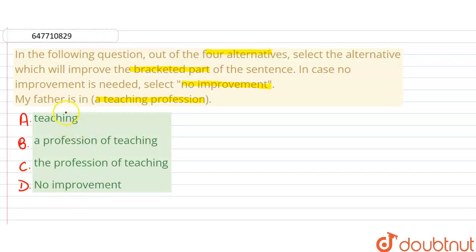So, let's read this sentence. My father is in a teaching profession. Which profession is his? Teaching profession. So, when we use the preposition 'in', basically, we say the profession of teaching. That is option either B or C.